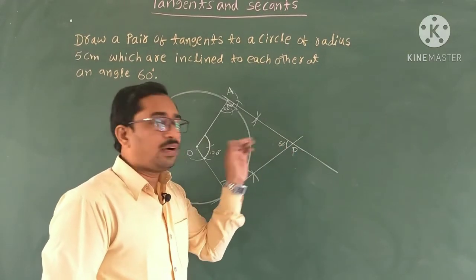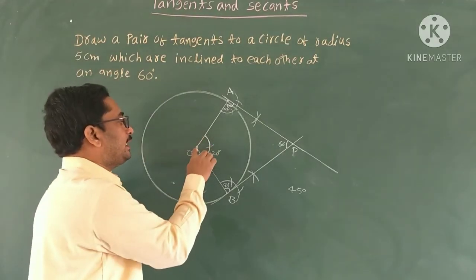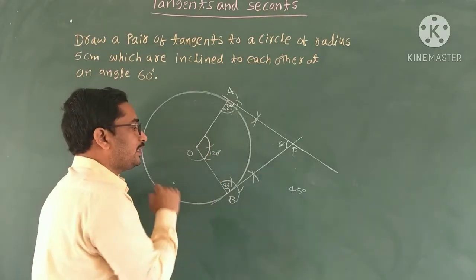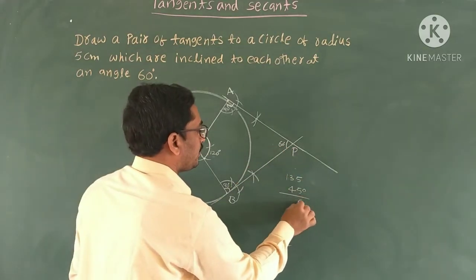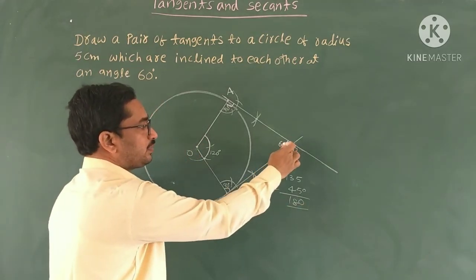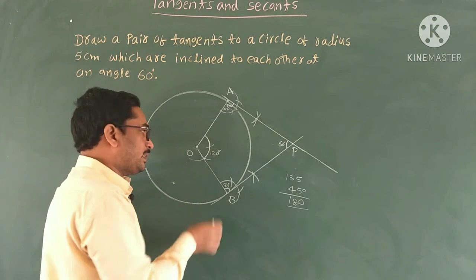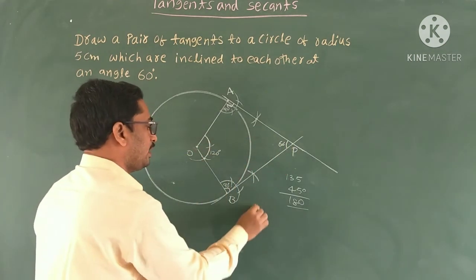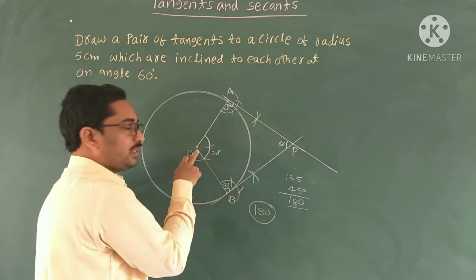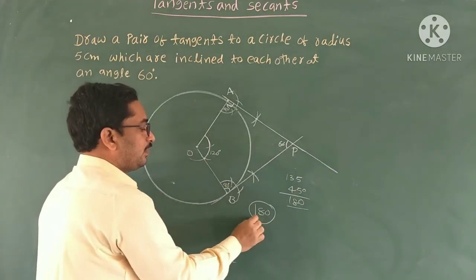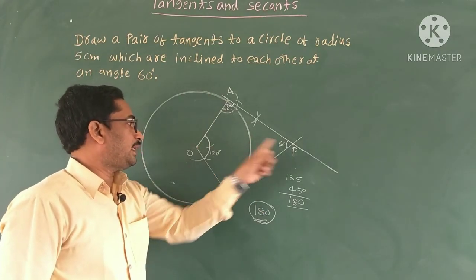Now, if the angle between the tangents is 45 degrees instead of 60 degrees, how do we construct the tangents? Take the angle at center O as 135 degrees instead of 120, because the sum of the angles at O and at P must be 180 degrees — 135 plus 45 equals 180. So if the angle between the tangents is 45 degrees, take the angle at center O as 135 degrees. The main concept is: angle at O plus angle at P equals 180 degrees. Using this, we can draw tangents for any given angle between them.